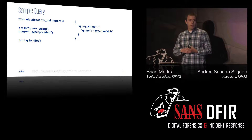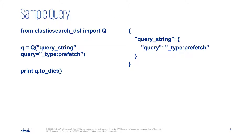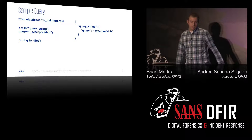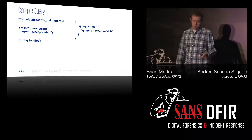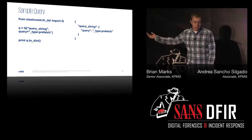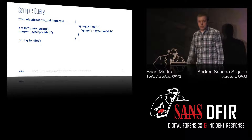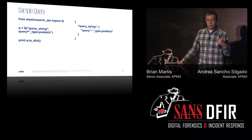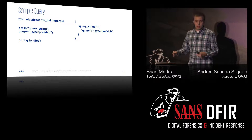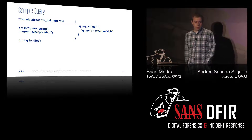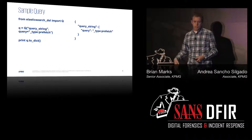So let's say we want to make a query on file execution. We import the library and the Q object, and then here is how you would build a query object. We're going to use the artifact prefetch — it's a great artifact to see if a file executed. You make your query string, then this is how you deserialize a query object to a string and print it out. This is what's called the body string, and this is what is sent to Elasticsearch in the HTTP REST API. As you can see, it's pretty basic — just a couple of brackets and your query string.